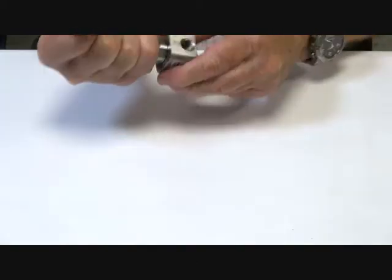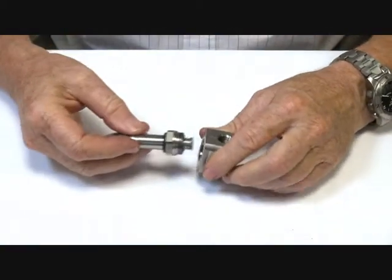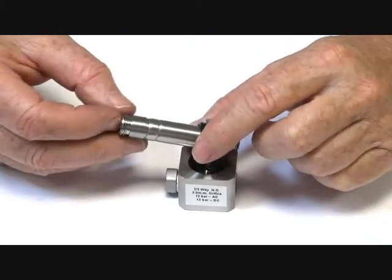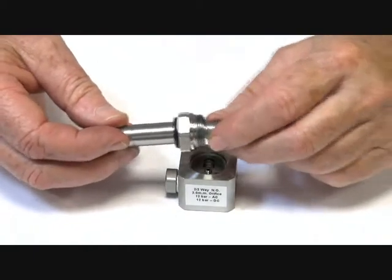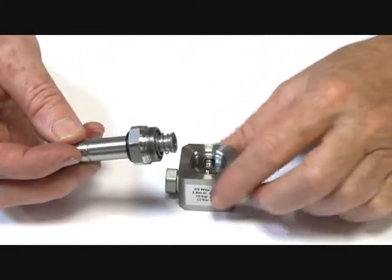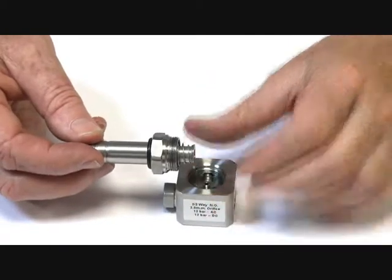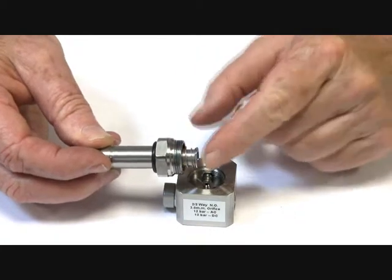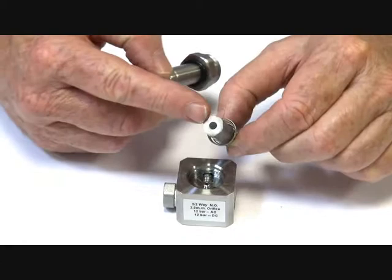Normally we have liquid or media going in through here, past the armature which is inside here, and out through the hole in the side here to port 2. When the power is operated, the coil is energized and it pulls the armature up, which seals off against the jet in the top of the stem. Rubber seats in there which seals up in the top and cuts the flow.